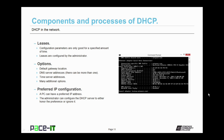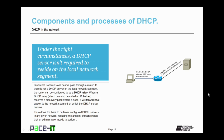When a PC boots up, it does have a preferred IP address — that would be the IP address it had the last time it booted up. It can request that same IP configuration from the DHCP server, and the administrator can configure the DHCP server to either honor that preference or to ignore it. Under the right circumstances, a DHCP server isn't required to reside on the local network segment. As a general rule, broadcast transmissions cannot pass through a router, but if there is not a DHCP server on the local network segment, the router can be configured to be a DHCP relay.